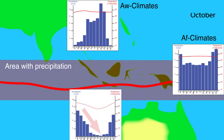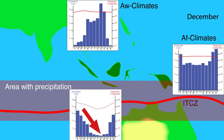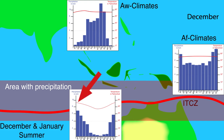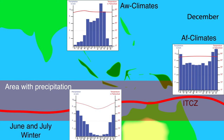South of the equator it rains in December and is dry in June. Because December and January are warm in the southern hemisphere, this is called summer there — the seasons are reversed compared to the northern hemisphere. June and July are the winter months in the southern hemisphere, so the drought in June and July is a winter drought. These regions are therefore also AW climates: warm and dry in the winter months.